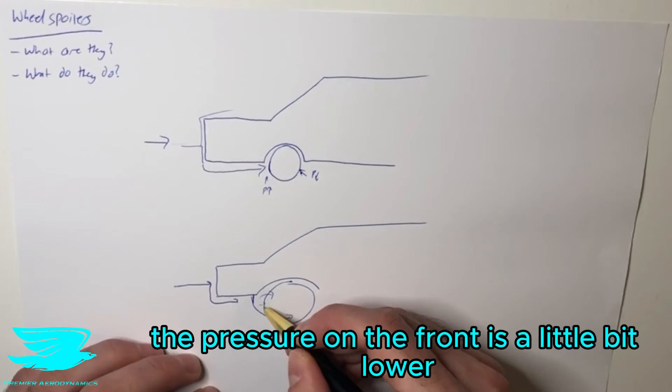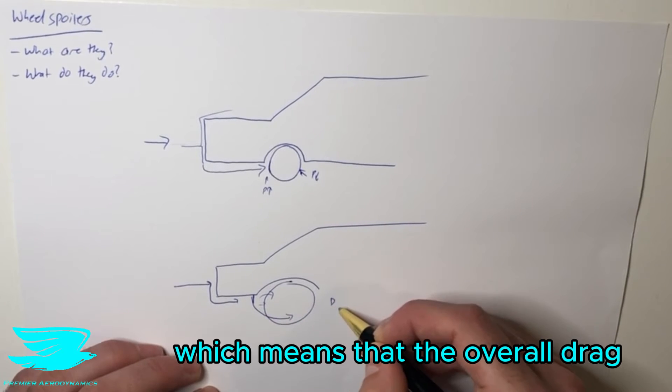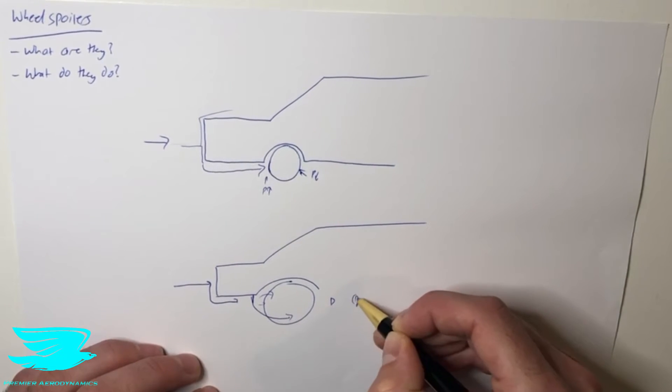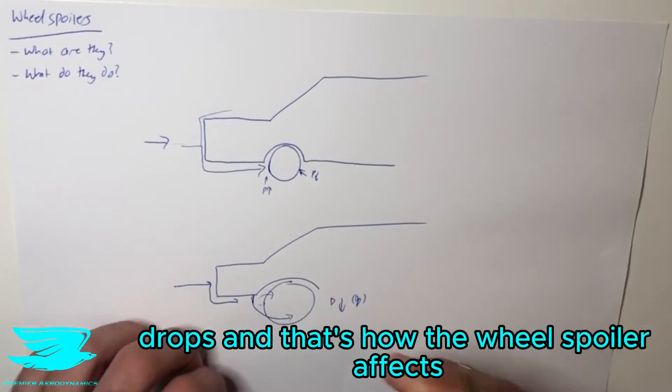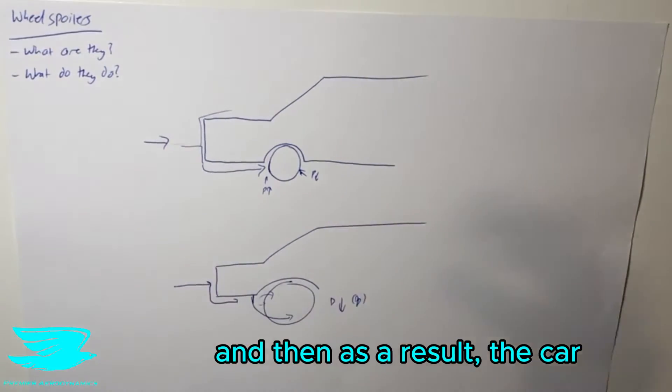That way, the pressure on the front is lower, which means the overall drag, mainly the pressure drag, drops. That's how the wheel spoiler affects the drag of the wheels and, as a result, the car.